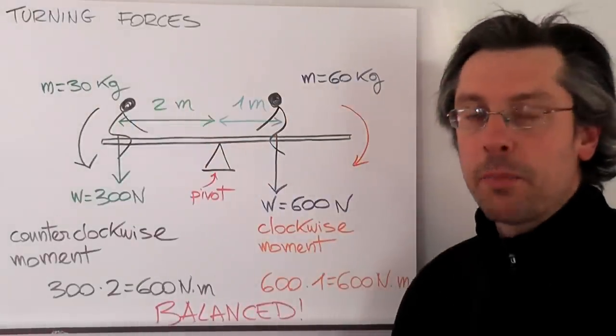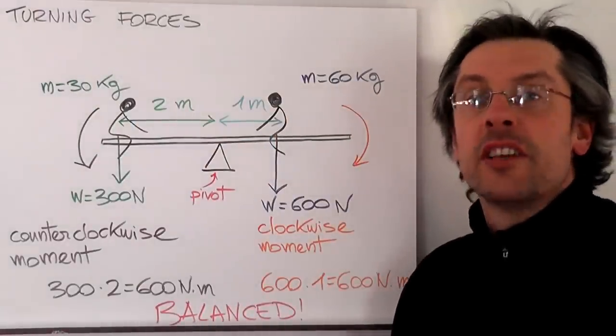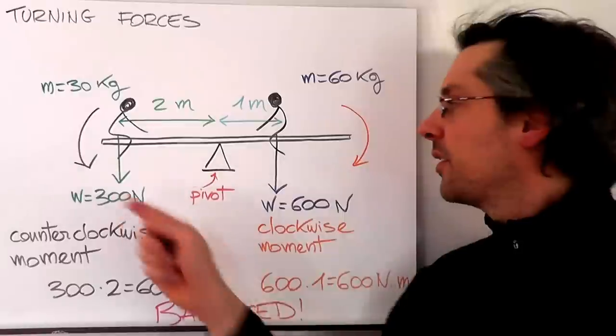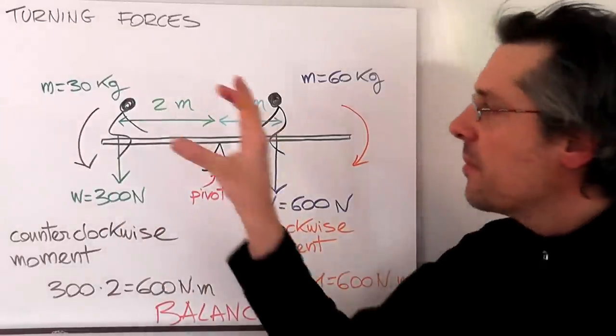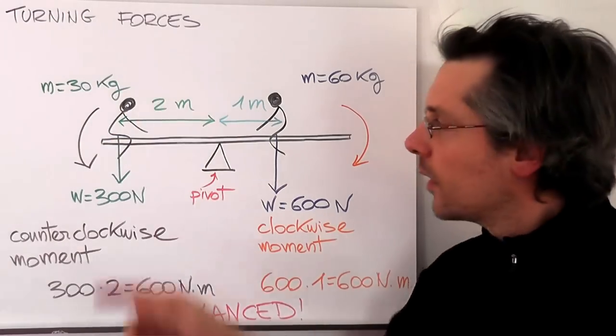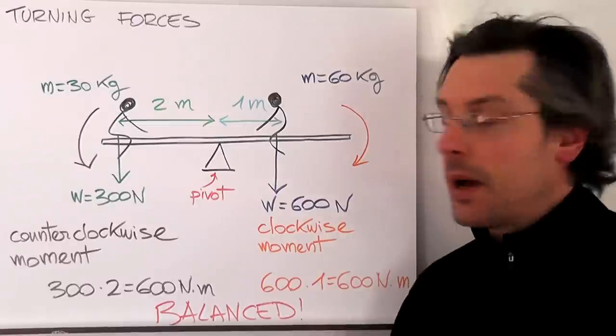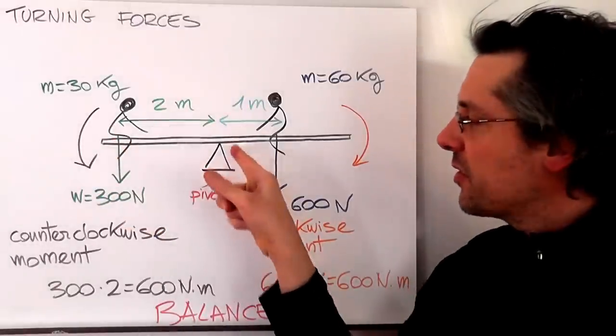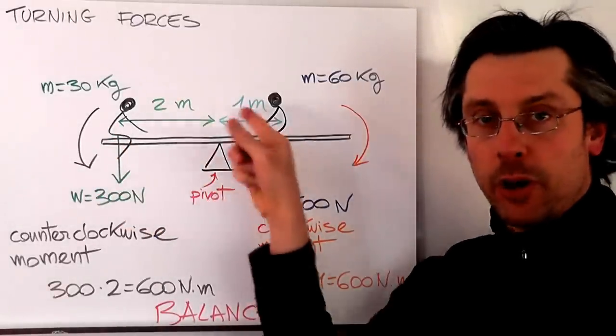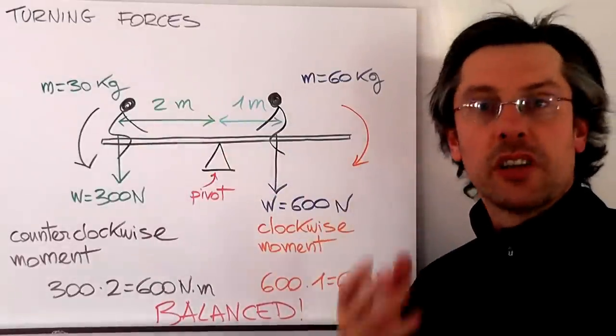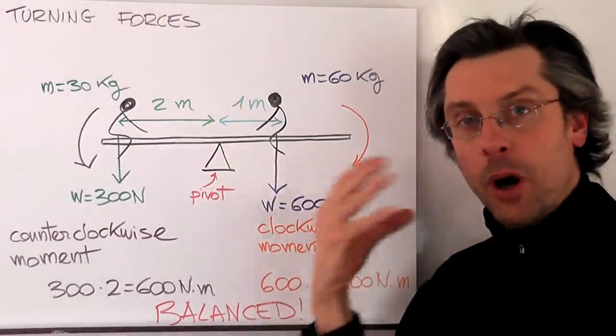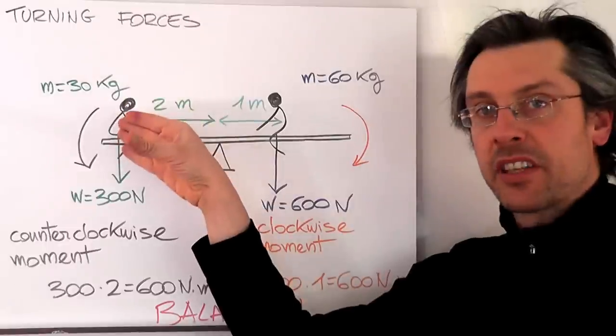A very nice application of turning force is in playgrounds. So this is what we call the seesaw problem. Let's imagine we have a kid whose mass is 30 kilograms and sits two meters away from the turning point, the pivot of our seesaw. So let's calculate the torque, the moment, applied by this kid.